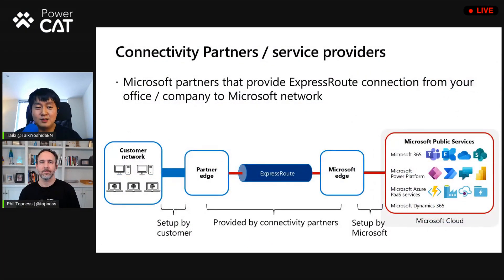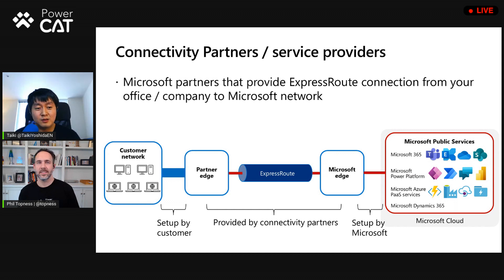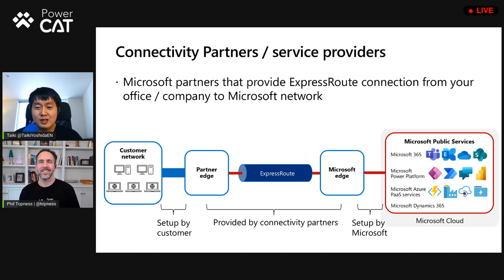What are the things you would need to do to set up ExpressRoute? There are several things you need to understand before you jump in. One of the things that will be critical is to work with your connectivity partner. At home when you make an internet connection, you always have a contract with your internet provider — it's a similar way. There's also a thing called a connectivity partner specifically for ExpressRoute, and it's usually globally located. You basically reach out to them to set up this ExpressRoute network, because they set it up so that it goes directly to Microsoft data centers.